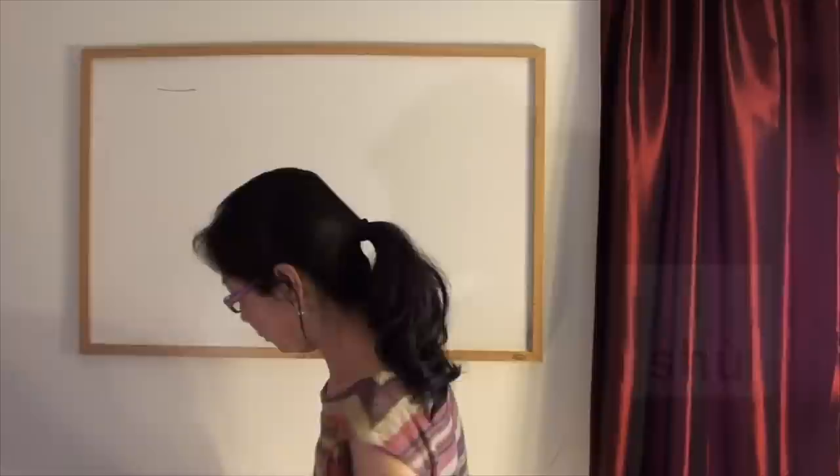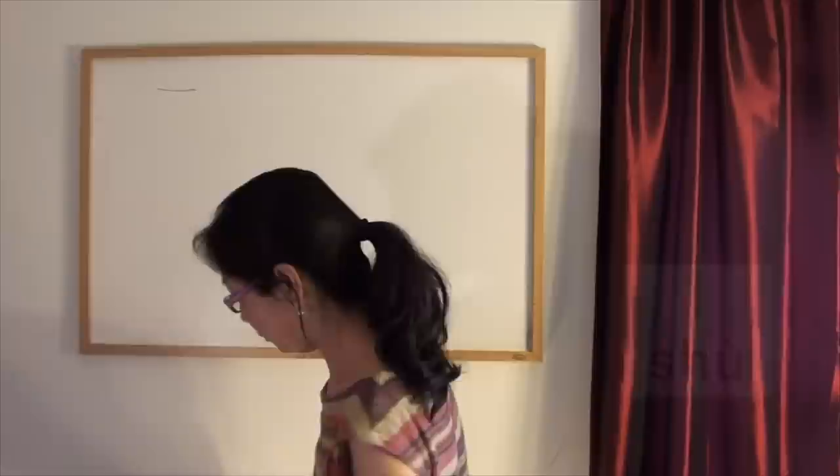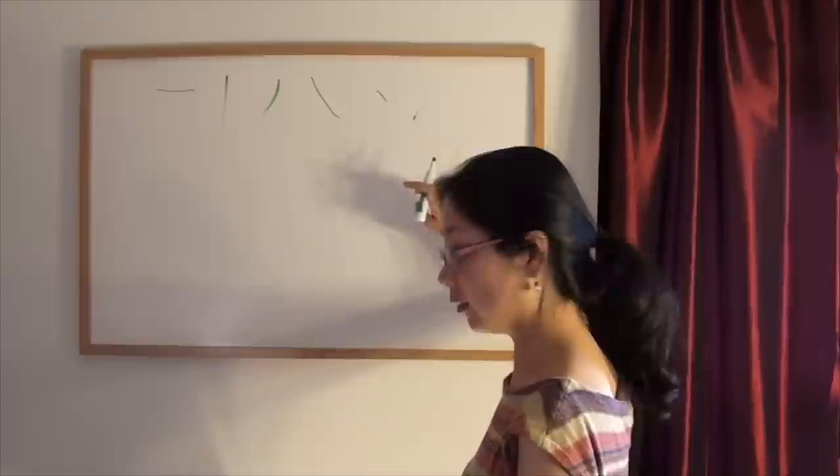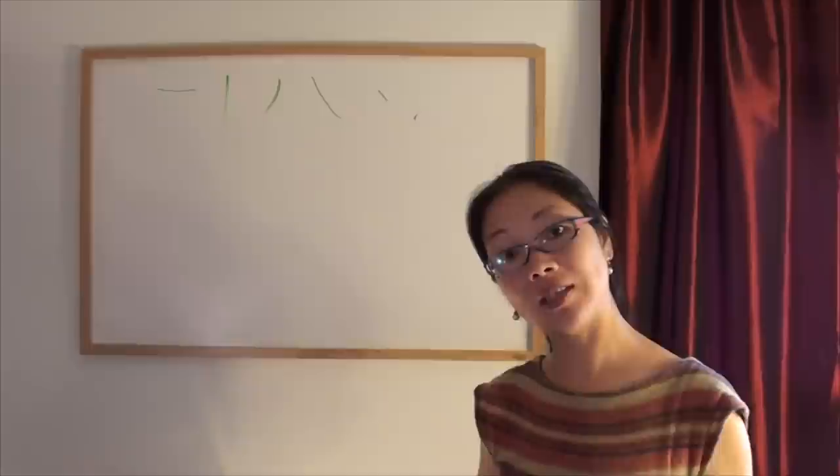Last week, we introduced the 6 basic strokes of characters. Do you remember what they are? Horizontal, vertical, left falling, right falling, dot, and rising up.